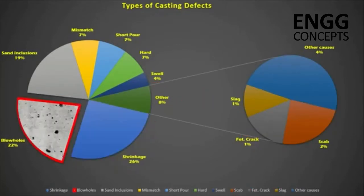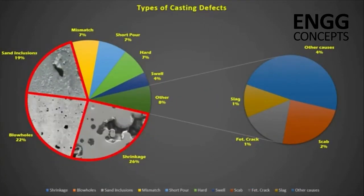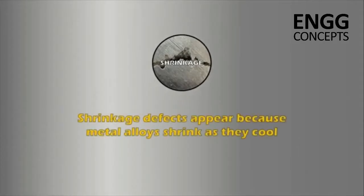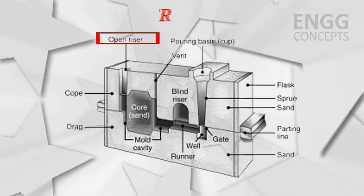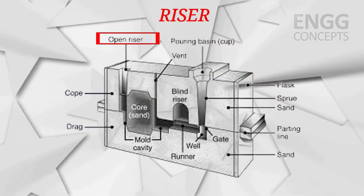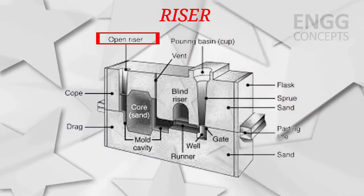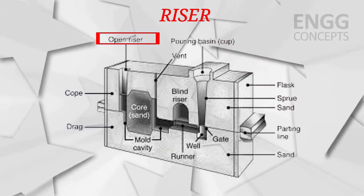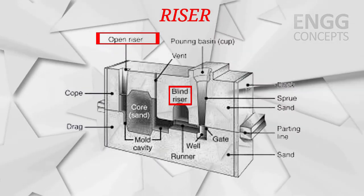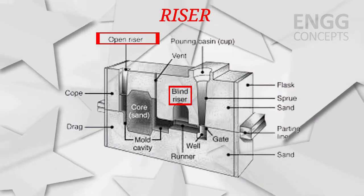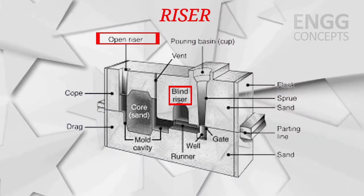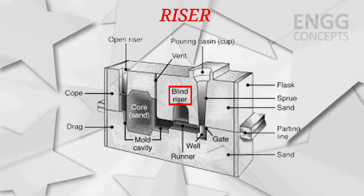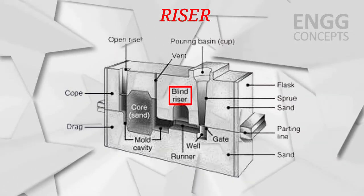In the casting process, shrinkage is a very common problem. Shrinkage happens when the liquid metal solidifies into solid. To address the shrinkage problem, risers are used. The riser is placed in such a way that it supplies molten metal to the cavity as required. The riser acts as a reservoir of molten metal, allowing molten metal to flow back into the mold cavity when there is a reduction in volume due to solidification.